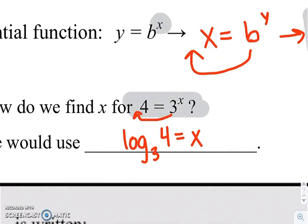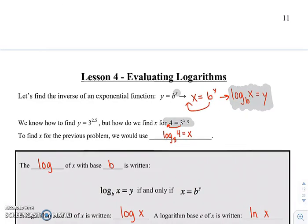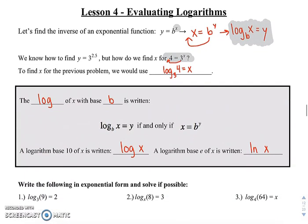That 3 will come over and become the base for a log. The 4 is just over on the left-hand side. x is what we have left. So it's going to be important that you guys can go back and forth between writing an expression from logarithmic to exponential form.